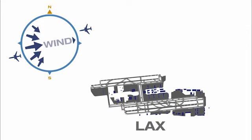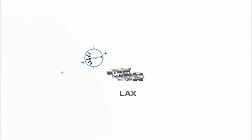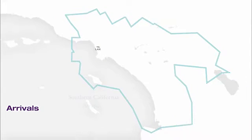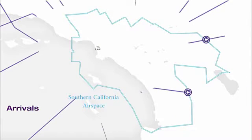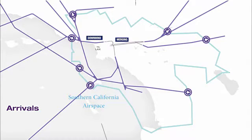Wind direction and velocity determine departure and landing direction. Aircraft generally must take off and land into the wind. Southern California airports typically experience westerly winds, which require planes to take off and land to the west. When in a west flow, air traffic control sequences arrivals from all directions. These arrivals are sequenced to land on two runways simultaneously, and aircraft are sequenced and merged into each arrival stream.